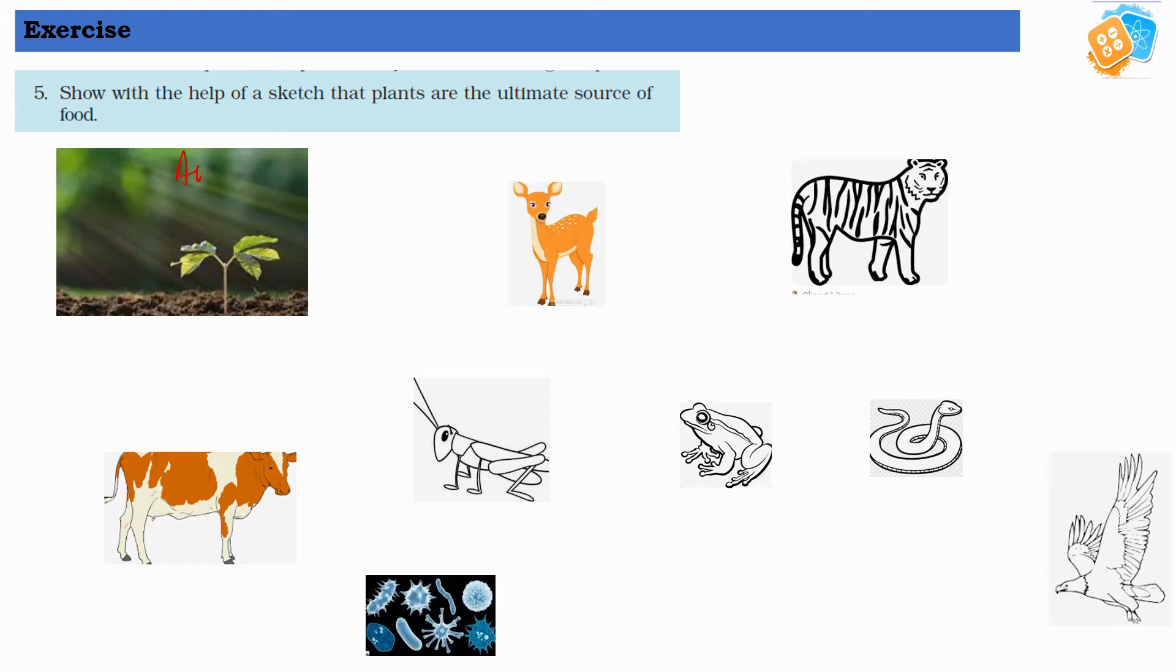Plants will be eaten up by the deer, and deer will be eaten up by the tiger. Plants will be eaten up by the grasshopper, grasshopper will be eaten up by the frog, frog will be eaten up by the snake, and snake will be eaten up by the eagle.